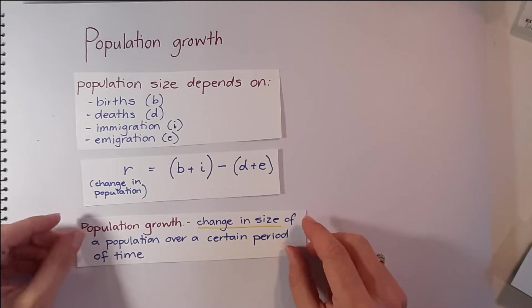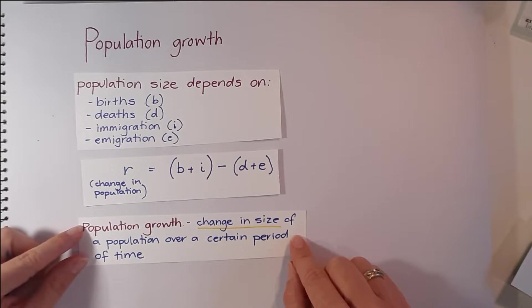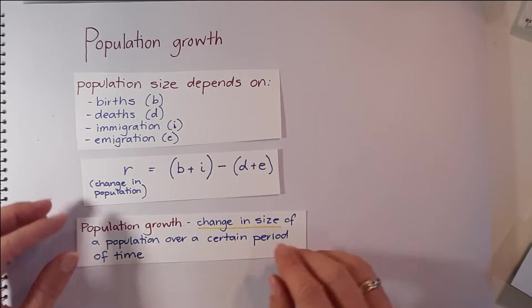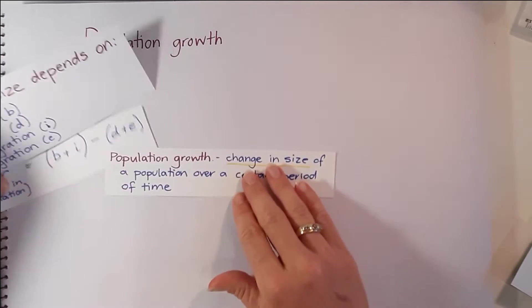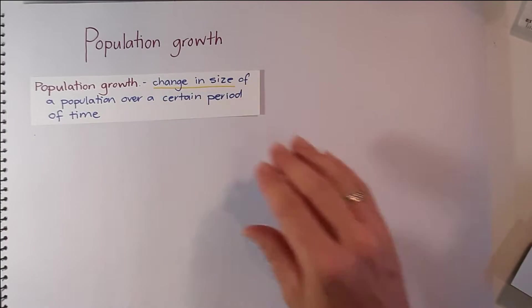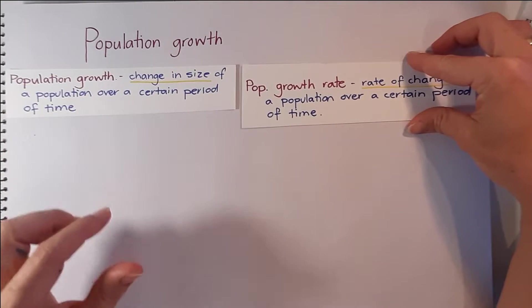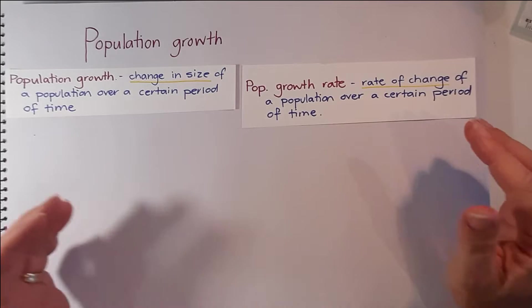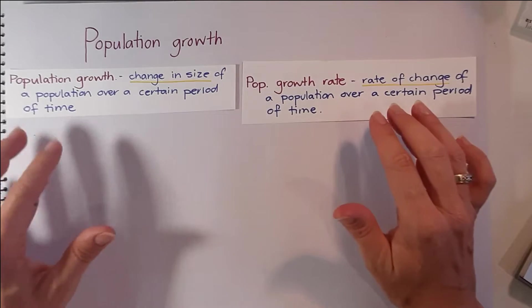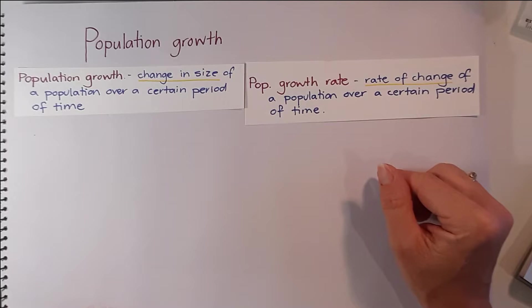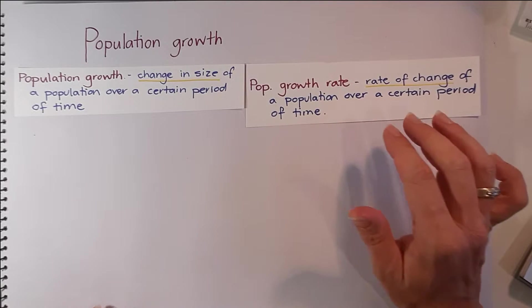So when we do this calculation, it will tell us what the population growth is, or the change in the size of that population over a certain period of time that you're looking at. So that's population growth. This is different to when we determine how quickly or how slowly a population is changing in size. This is when we can look at population growth rate, or the rate of change of a population over a certain period of time.